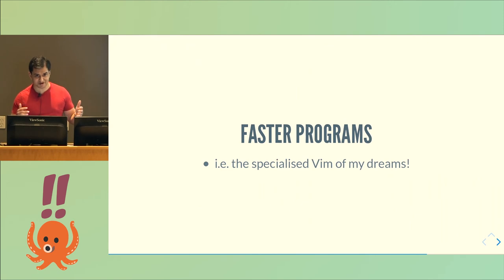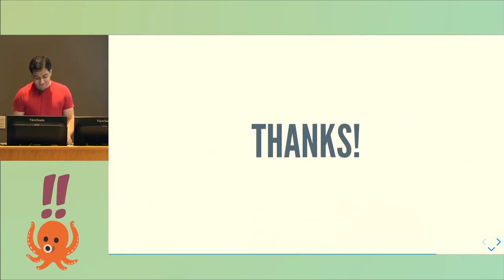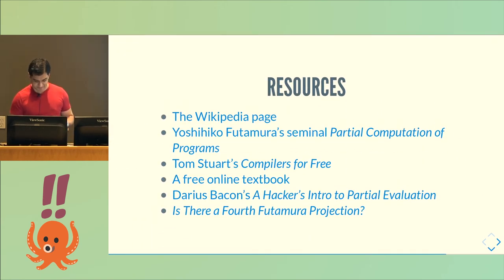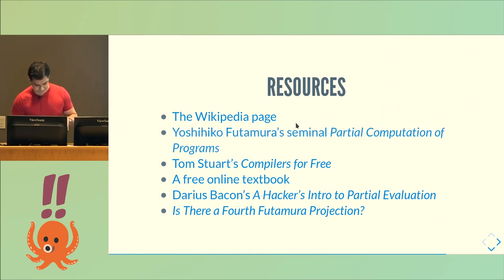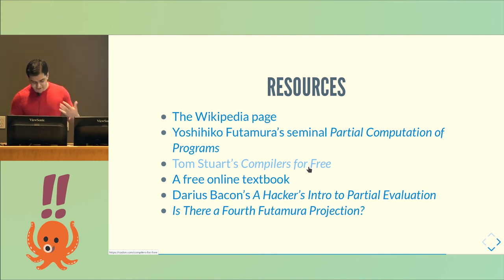And also, it just gives you 500 programs. I still would like that specialized Vim — I think it would make me very happy. That's essentially all I have. Here are some resources: the original paper, a link to my slides coming shortly, the Wikipedia page, and a much longer talk called 'Compilers for Free' that goes into details and gives you a sample language to work with — it's about 30 minutes to an hour long.